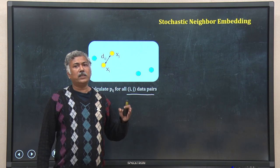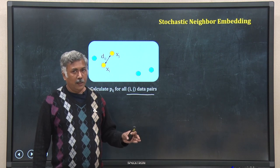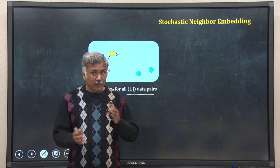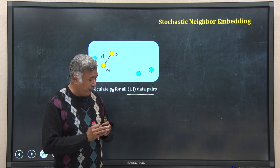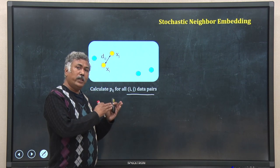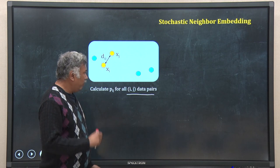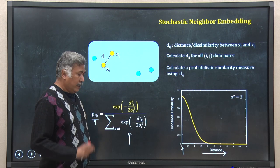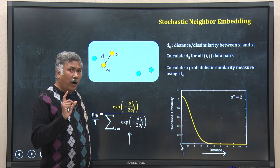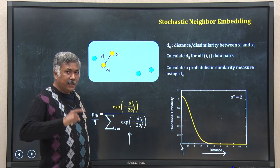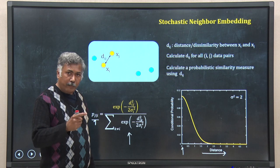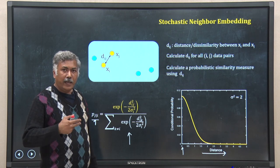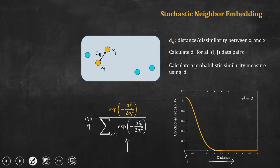I calculate all 10 probability values. Now, instead of using the distance between pairs directly, I will use the corresponding probabilities p_ij. Before moving further, let me explain another issue. I said I will not use d_ij directly but will use p_ij — so how will that change things? How will p_ij affect further calculations?